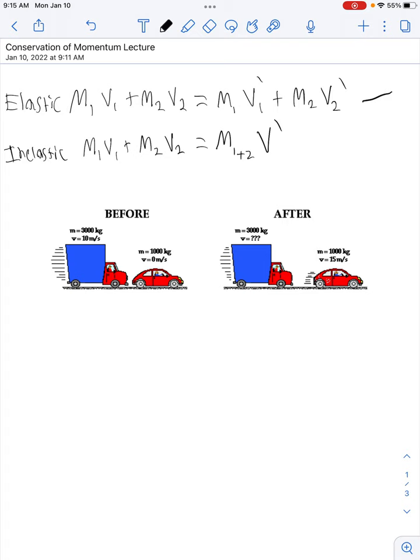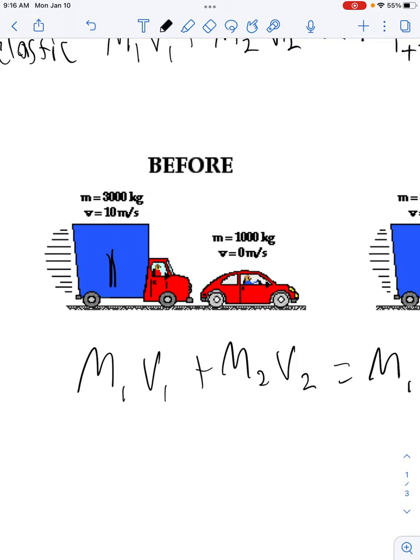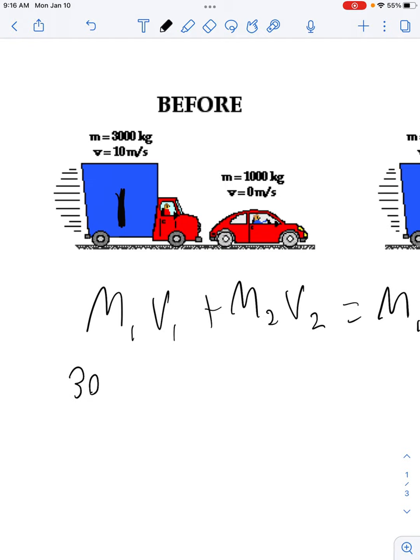So I'm going to rewrite it really quickly. M1 V1 plus M2 V2 equals M1 V1 prime plus M2 V2 prime. All right, so the mass of object 1. Object 1 is the truck. The truck has a mass of 3,000 kilograms, which you can see right here. And it's moving at a velocity of 10 meters per second. So we do 3,000 times 10. Next part of the equation is the addition sign, so that comes down.